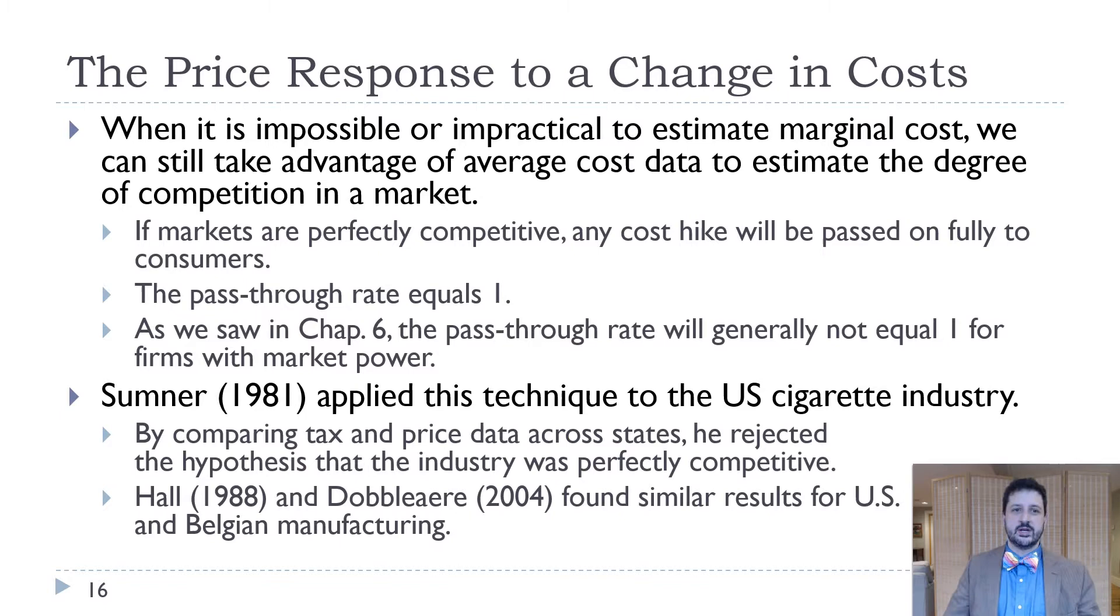When it's impossible or impractical to estimate the marginal cost, we can still take advantage of average cost data to estimate the degree of competition in the market. The idea here is that when costs go up in perfect competition, price equals marginal cost and so price should go up one for one. But when you have market power and costs go up, then because of that market power, your price will not go up by the same amount.